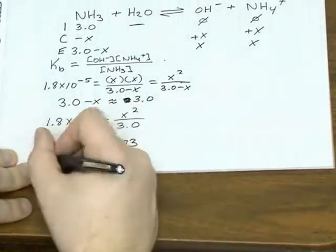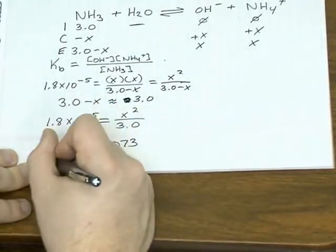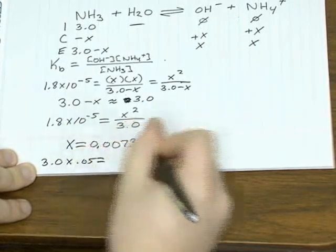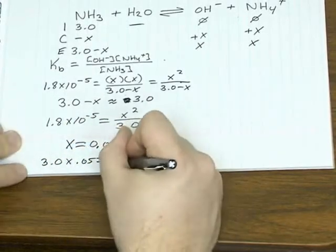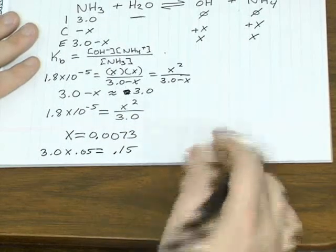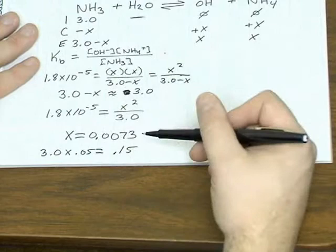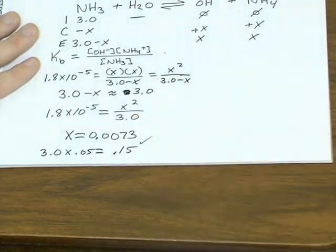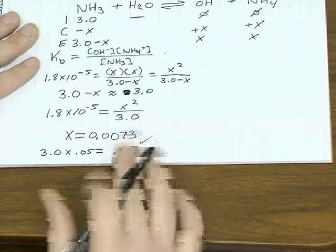And if you check the 5% rule, if you find 5% of 3, that is 0.15. So like before, the approximation is valid. X is significantly less than 5% of 3.